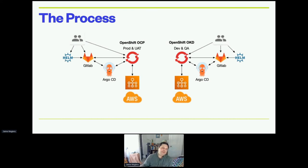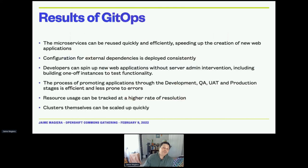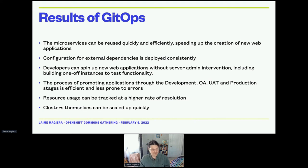Our process has developers and DevOps working together with Helm charts, GitLab, OpenShift OCP, Argo CD — all running on top of AWS. The results of implementing GitOps: microservices can be reused quickly and efficiently, speeding up the creation of new web applications. Configuration for external dependencies is deployed consistently. Developers can spin up new web applications without server admin intervention, including one-off instances to test functionality. The process of promoting applications through development, QA, UAT, and production stages is efficient and less prone to errors. Resource usage can be tracked at a higher rate of resolution as you watch things get synchronized in the feedback loop.